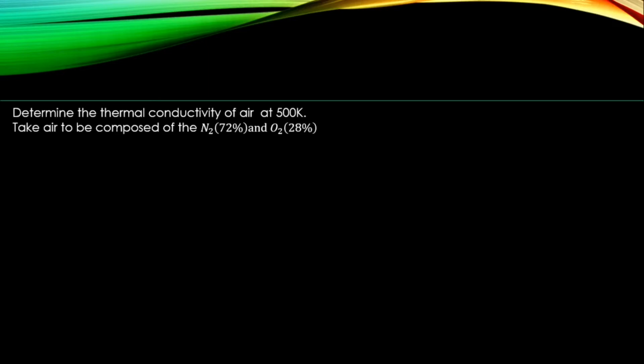We have monoatomic gases, polyatomic gases, and mixtures. For monoatomic gases, the formula you use is: k = 1.9891 × 10⁻⁴ times the square root of temperature over molecular weight, all over the collision integral times the energy parameter squared.